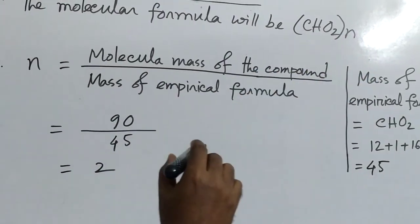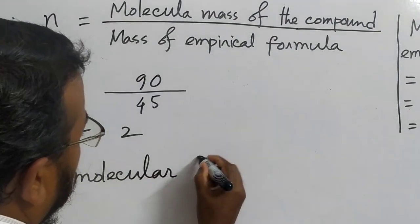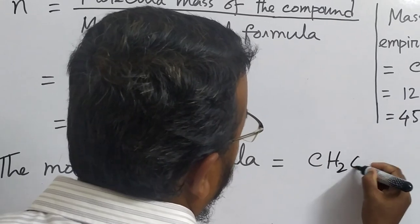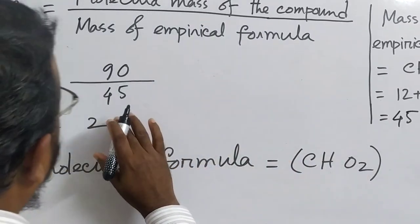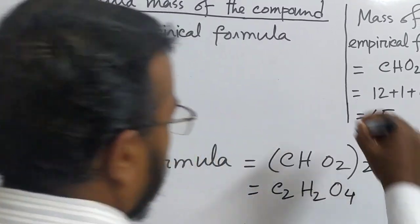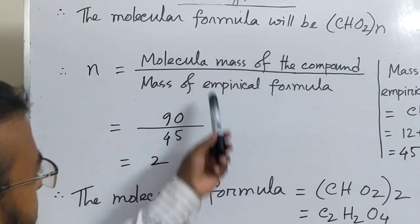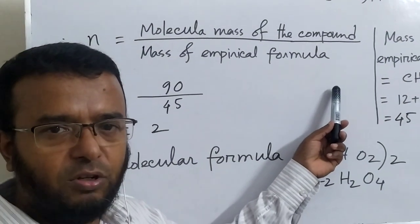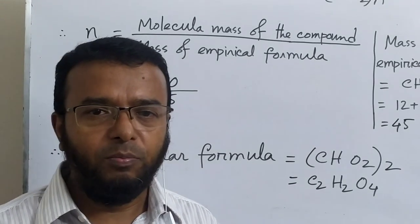We put the value of N = 2 into the empirical formula CHO2. Therefore, the molecular formula is C2H2O4. The name of the compound is oxalic acid. From the empirical formula, we can easily get the molecular formula using this method. This is very important for your coming exam. All of you please be serious in your studies.